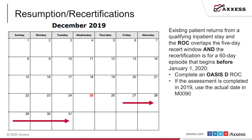What about those resumption recerts? There are occasions when the patient will have been hospitalized and will come out of the hospital ready for a resumption of care during the same five-day window that a recert should happen. OASIS guidance tells us we'll actually do a resumption of care that will act as a recert. If that falls between December 27th and December 31st, when the existing patient returns from a qualifying inpatient stay and the resumption overlaps the five-day recert window and the recertification is for a 60-day episode beginning before January 1st, 2020, we complete an OASIS D resumption of care.